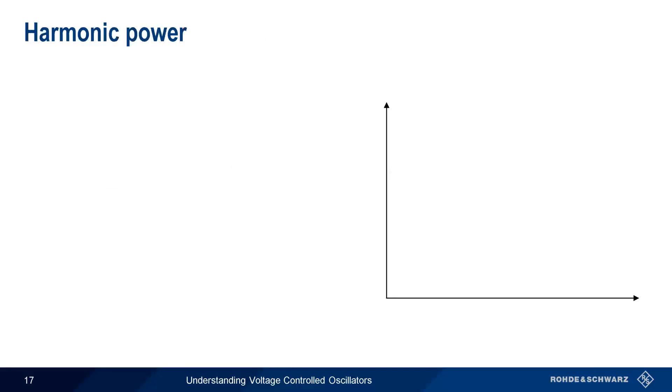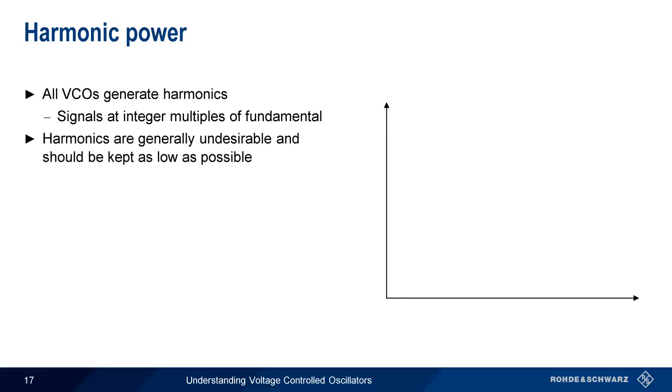Like all other types of oscillators, VCOs generate harmonics, which are signals that appear at integer multiples of the fundamental frequency. Harmonics are almost always undesirable, and therefore the level of these harmonics should be kept as low as possible. Tens of dB is a common design goal. Note that some types of VCOs may even incorporate filters or other methods for suppressing harmonics.